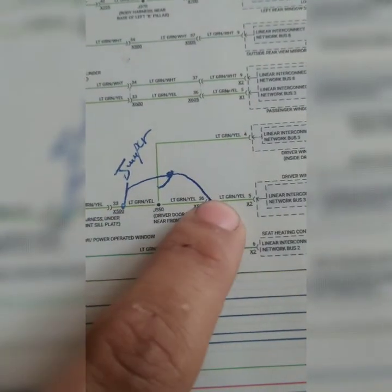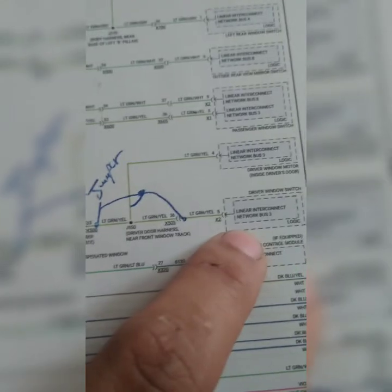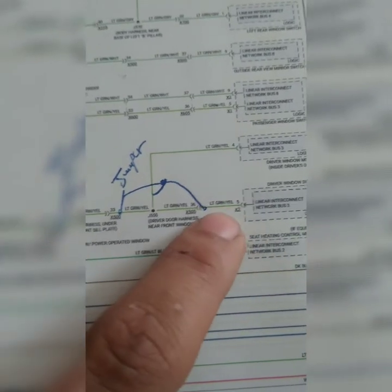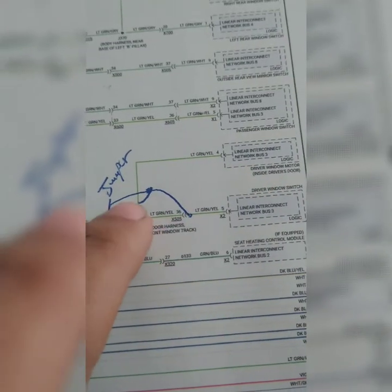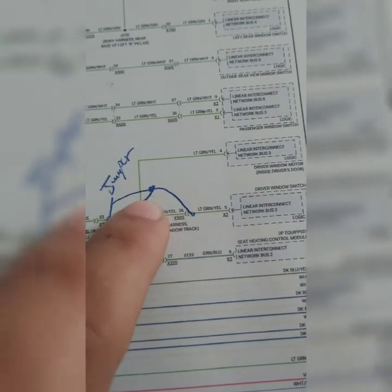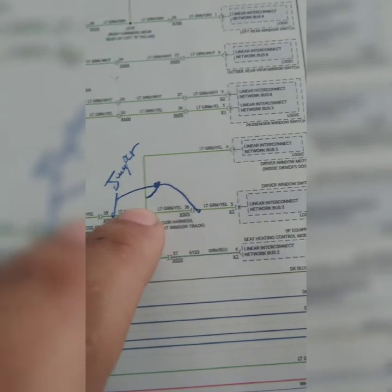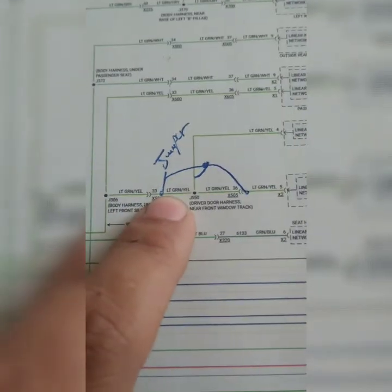I did not take into account this splice here. There's a splice. So what happened was, once I did my jumper the first time from here to here, my window switch was working for the other three windows but not my driver window. Why? Because I did not complete the splice. So I had to splice another wire from here to here and that was it. After that, everything was working fine, back in business.